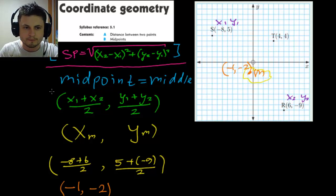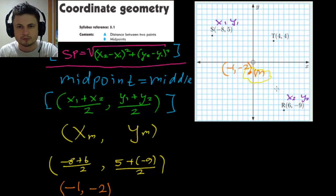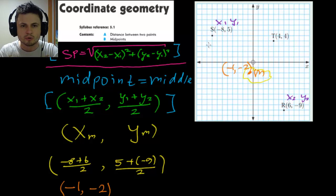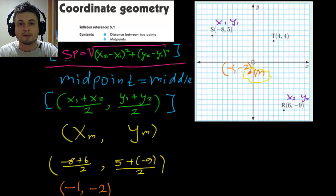Both the distance formula and the midpoint formula are given on the formula sheet, but if you can memorize how to use them, you'll save time on the test. This is it for the first part — sub-chapters A and B of coordinate geometry. In the next video we'll look at sub-chapters C and D. Thanks for watching and good luck!